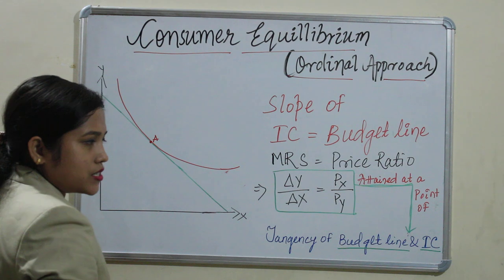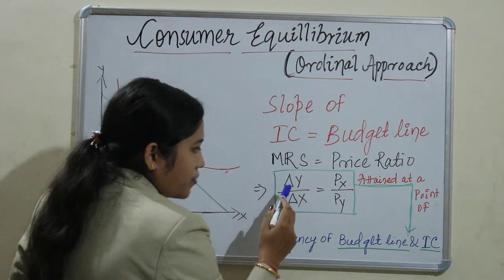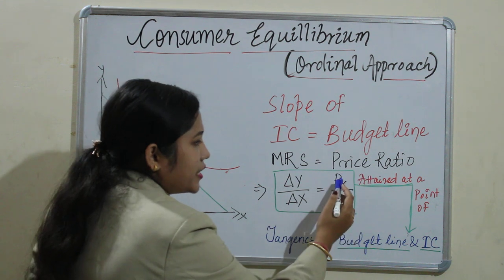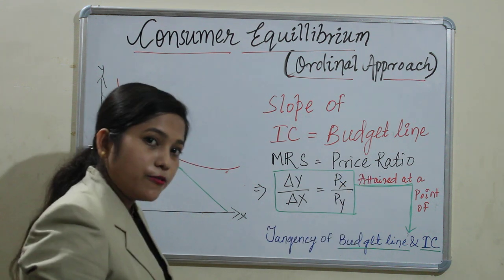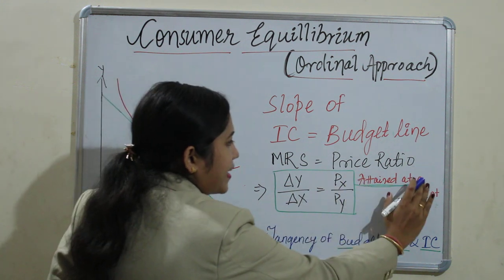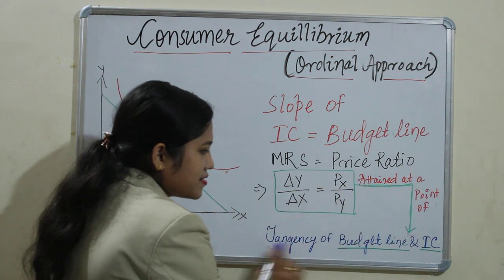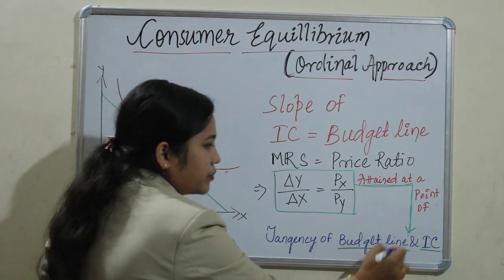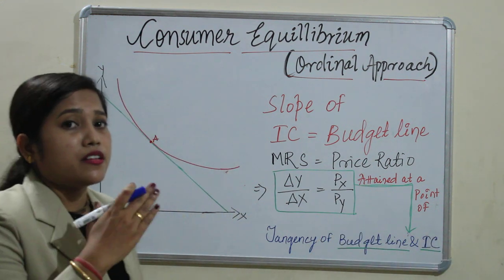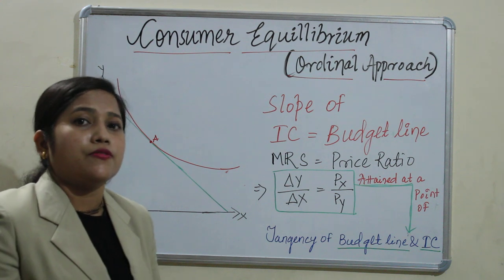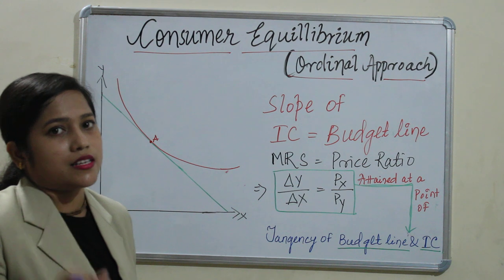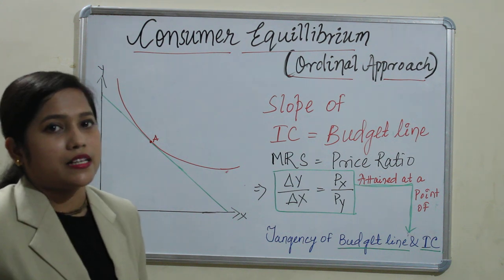The slope of the indifference curve is the marginal rate of substitution, and the slope of the budget line is the price ratio. Marginal rate of substitution is change in Y divided by change in X, and the price ratio is Px divided by Py. This situation is attained at the point of tangency between the budget line and the indifference curve — the point where the budget line touches the surface of the indifference curve is called consumer equilibrium.